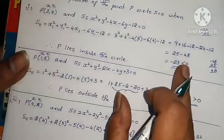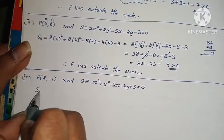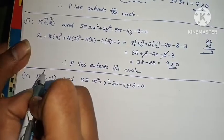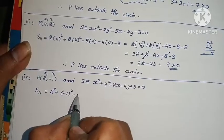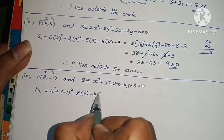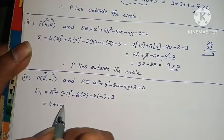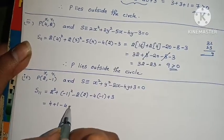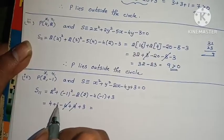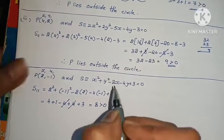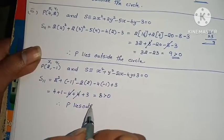Substituting x1=4, y1=2: 2 into 4 squared plus 2 into 2 squared minus 5 into 4 minus 4 into 2 minus 3 = 32 plus 8 minus 20 minus 8 minus 3 = 32 minus 23 = 9. Since 9 is greater than 0, therefore P lies outside the circle.